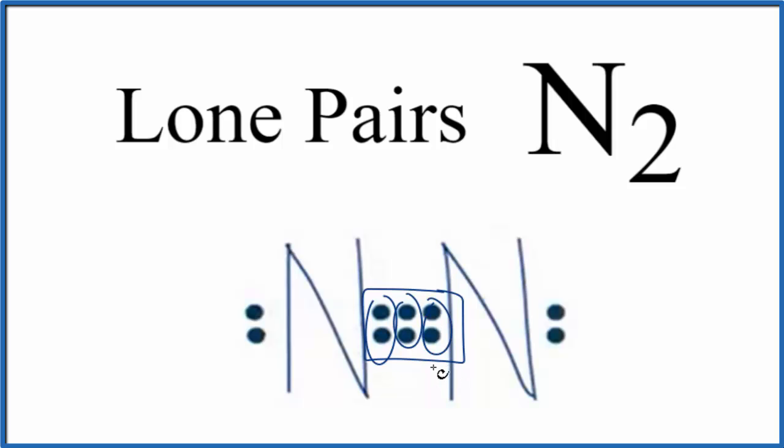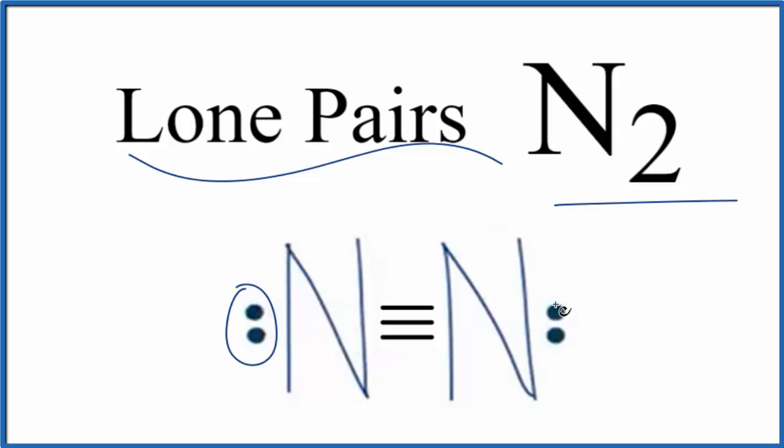You could represent it like this, where the lines, each line represents a pair of bonding electrons. So you'll see these lines here, another way to show that the electrons are involved in chemical bonds. But the lone pairs for nitrogen gas, they're the ones right here by themselves.